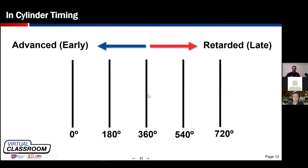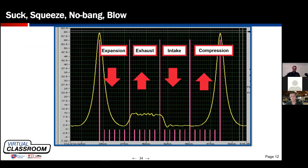We're going to plot signal outputs from the transducer on a lab scope screen over time. Anything occurring to the left side of the scope screen is happening earlier — we'll call that advanced. Anything closer to the right side relative to any particular point is happening later — retarded. Now, how does this relate to an in-cylinder compression waveform? Let's start with the four strokes. As the piston nears top dead center, pressure should be highest. As the piston overcomes TDC and descends, we call it the expansion stroke because the cylinder is decompressing — we have the spark plug removed and combustion is disabled.